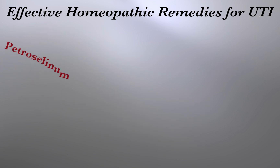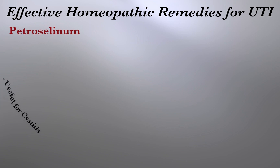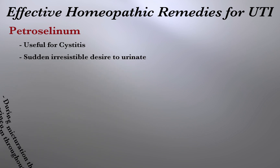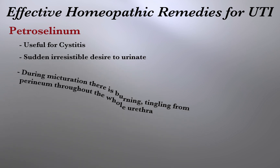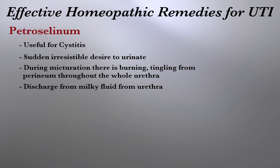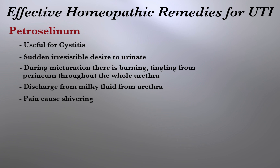The fifth remedy is Petroselinum. It is a useful remedy for cystitis. The patient experiences a sudden, irresistible desire to urinate. During micturition, there is burning and tingling from the perineum throughout the whole urethra. There is discharge of milky fluid from the urethra. There is so much pain while passing urine that it causes shivering.